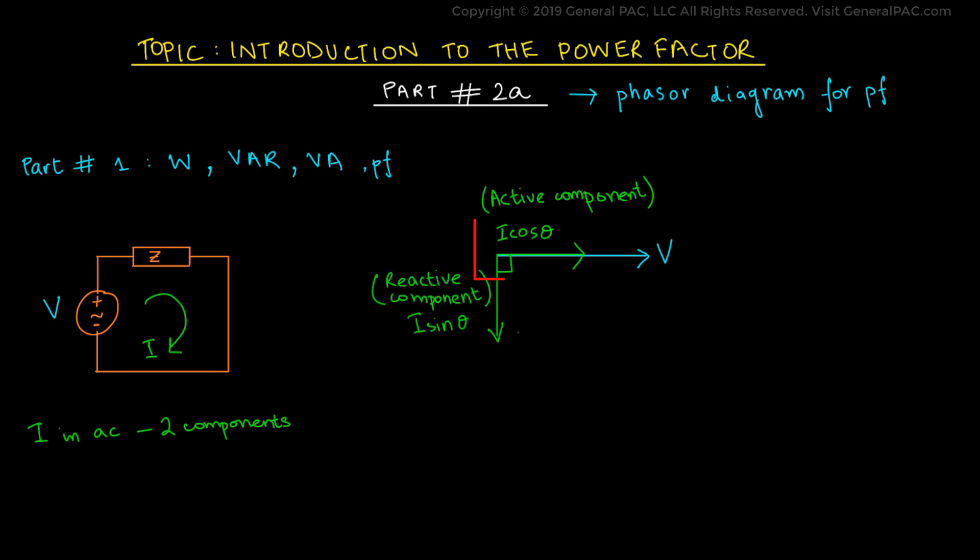The in phase component of current can be drawn on the same line as the voltage due to being in phase, whereas the out of phase component can be drawn as a perpendicular to the straight line. We can now draw the current as a vector sum of the two components.